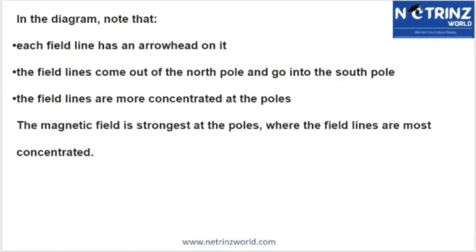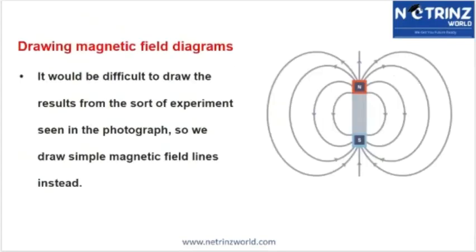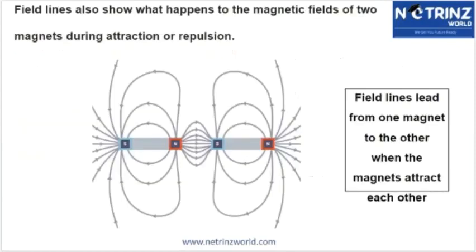The field lines are most concentrated at the poles, which is why the magnetic field is strongest there. When you draw these lines manually, you will see that towards the poles there is a bunch of lines, confirming that the magnetic field is the strongest at the north and south poles.